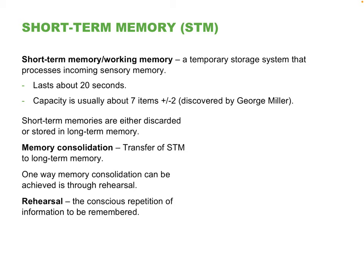Short-term memory is the key here. For those who understand computers, think of this as RAM — random access memory. When your computer is using RAM, you're watching YouTube and have five documents open. Unless you click save, if your computer shuts off the information is gone. It did not make it into permanent storage, and that's what short-term memory is.